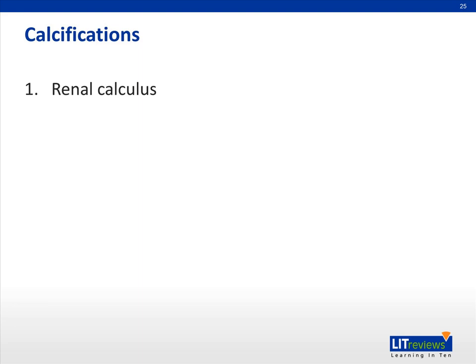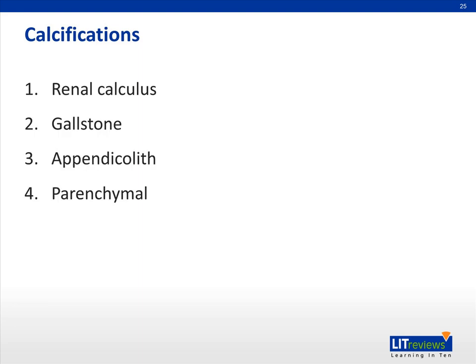For calcifications, here are some of the common ones we can identify: renal calculus, gallstones, appendicolith sometimes, parenchymal calcifications, masses or tumors, and vascular calcifications.